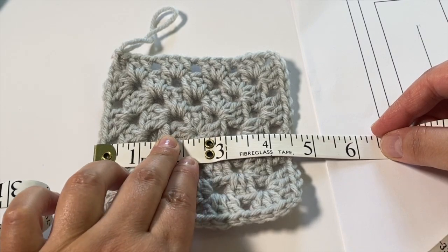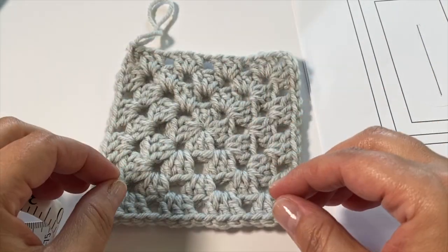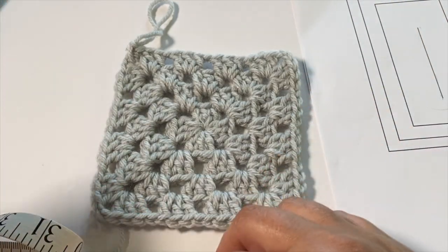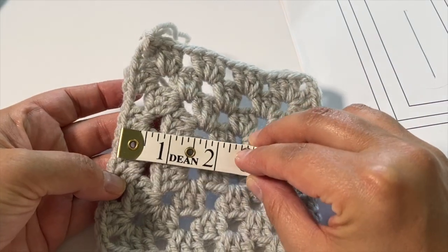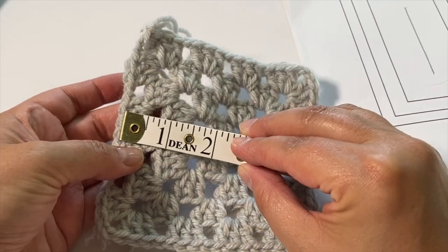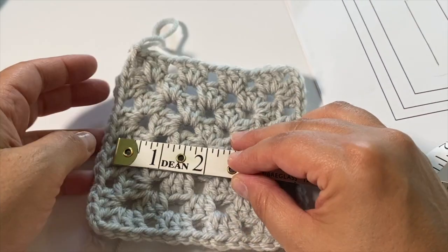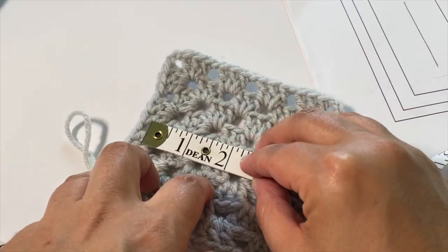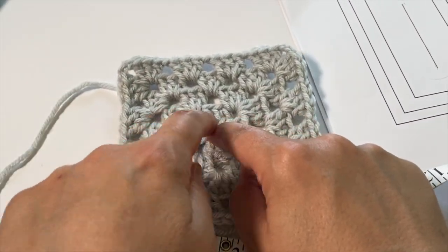It begins in the center and then it builds its way out evenly and equally on all four sides. So generally we start with a chain, a starting chain, and then we start building our rectangle with more and more rounds. So let's take a look at a granny square, for example. The difference between a square and a rectangle is the rectangle needs that little starting chain spine. And the square starts just with a little center point.